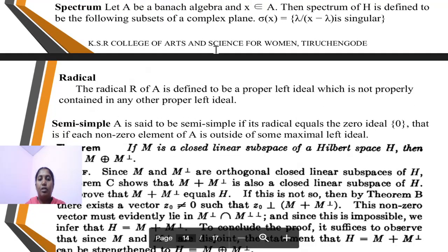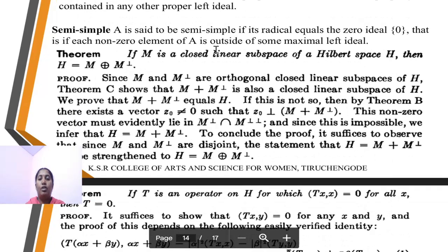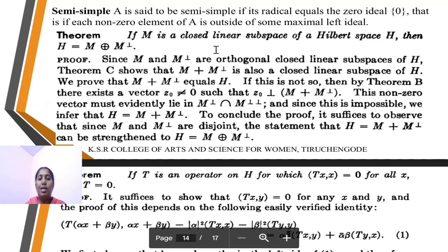Next definition: spectrum. Let A be a Banach algebra and h belonging to A. Then the spectrum of h is defined as the subset of the complex plane: σ(h) = {λ : h − λ is singular}. Next definition: radical. The radical r of A is defined as the proper left ideal which is not properly contained in any other proper left ideal. Next definition: semi-simple. A is said to be semi-simple if its radical equals the zero ideal, and each non-zero element of A is outside of some maximal left ideal.